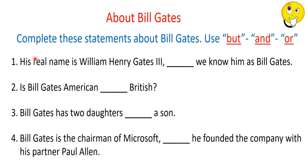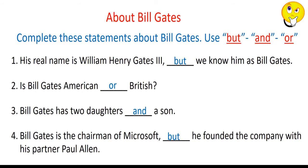Complete these statements about Bill Gates using 'but', 'and', or 'or'. His real name is William Henry Gates III, but we know him as Bill Gates. Is Bill Gates American or British? — here we have two options, so we use 'or'. Bill Gates has two daughters and a son — here 'and' shows addition. Bill Gates is chairman of Microsoft, but he founded the company with his partner, Paul Allen. Good job.